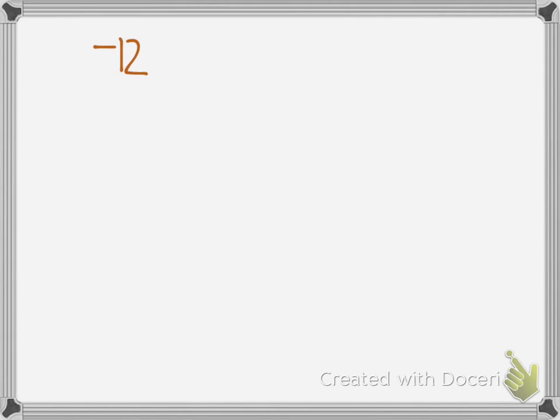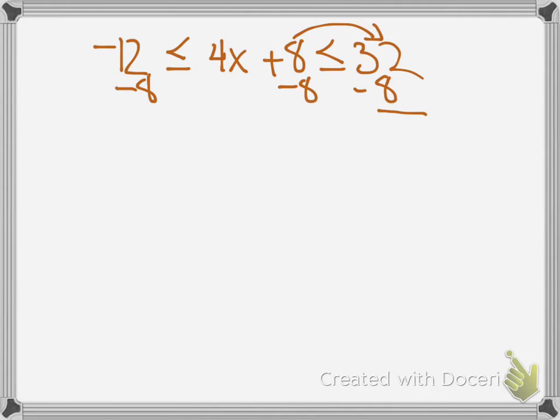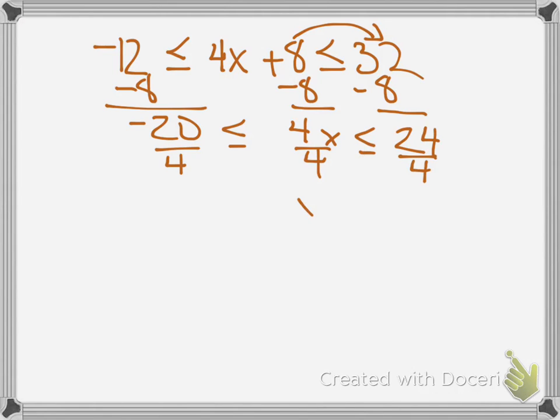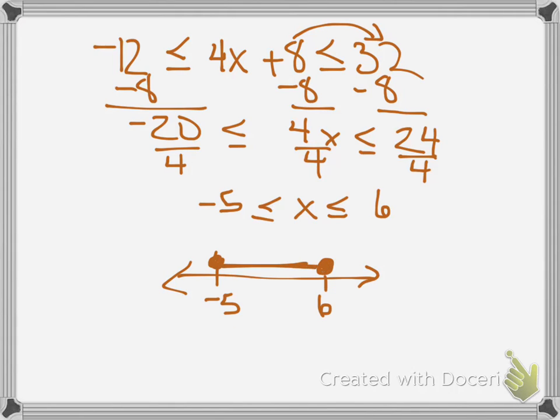Let's look at another example. Same thing. I'm going to get rid of the plus eight in the middle. So the opposite of plus eight is minus eight, and I do the same thing on both ends. Negative 12 minus 8 is negative 20, 32 minus 8 is 24. Then I divide by four and get -5 < x < 6. Most 'and's are going to be like this, where the variable is in between two numbers.